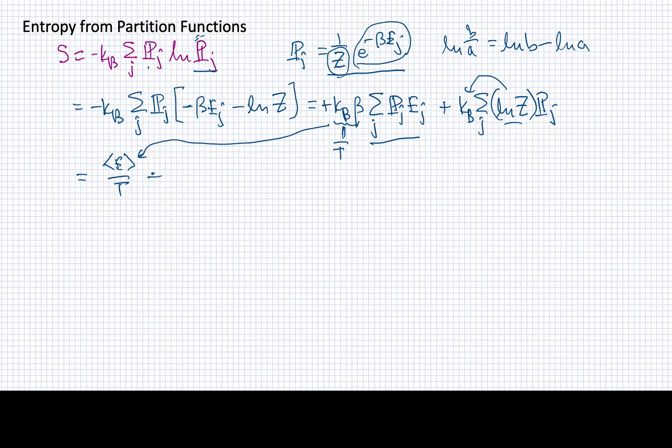Then we're going to add to that kb log of z. It's going to be multiplying a term that is the sum over all the states of the probabilities of the states. But I know that's just equal to one, so I don't even have to worry about it.